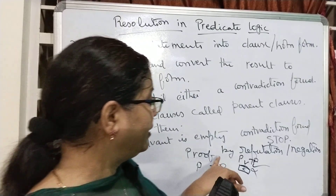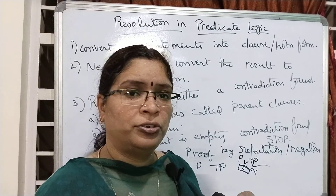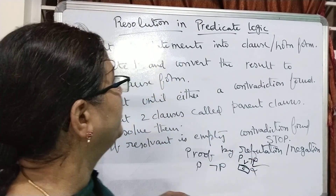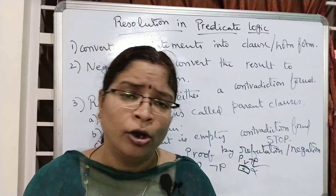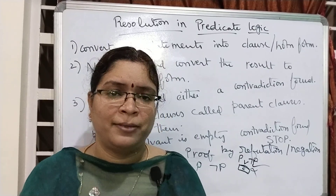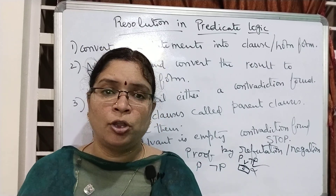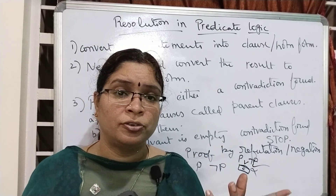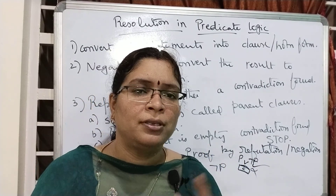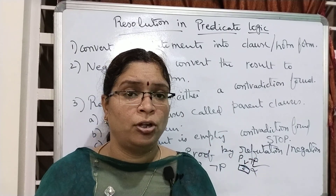The key thing to remember is that resolution must be started by proof by negation or proof by refutation. This is the way resolution works in predicate logic. The resolution algorithm is the same for both predicate logic and propositional logic, but the way of application is different. The other name for resolution is proof by negation or proof by refutation. Now we will see an example of predicate logic to understand how things get resolved and how it works.